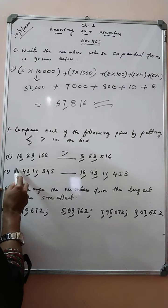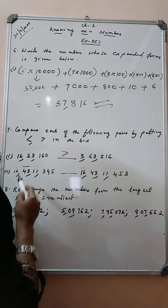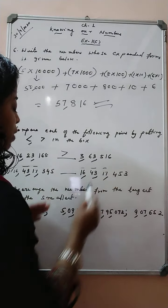In the crores period, we have 16. Here also we have 16. In lakhs period, we have 43 here. Here also 43. In thousands group, we have 17. Here also 17.